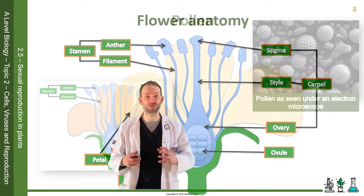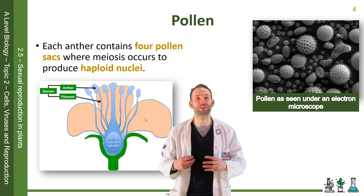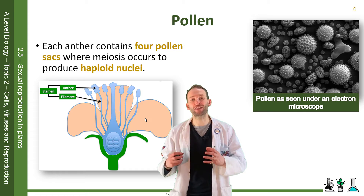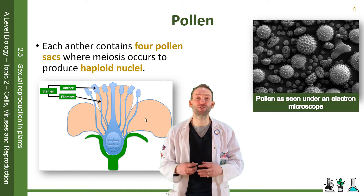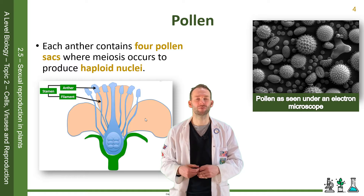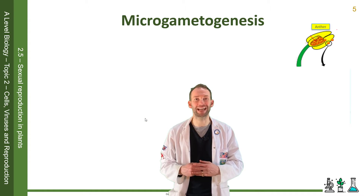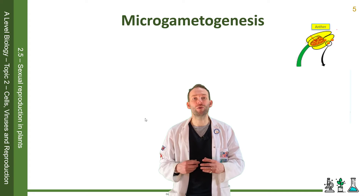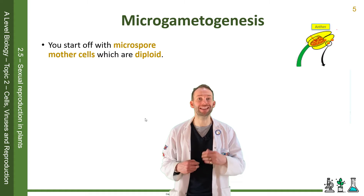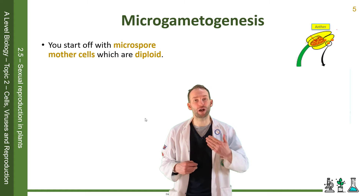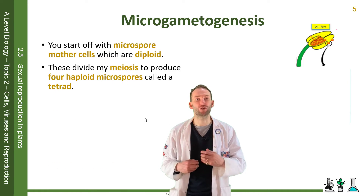The male gamete is called pollen and it is produced in the anthers of the stamens. Each anther contains four pollen sacs where meiosis occurs to produce haploid nuclei. Let's look at the process of microgametogenesis in more detail. You start off with microspore mother cells, which are diploid cells, and these divide by meiosis to produce four haploid microspores called a tetrad.